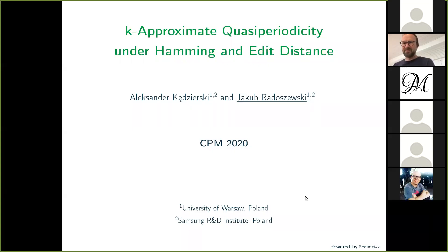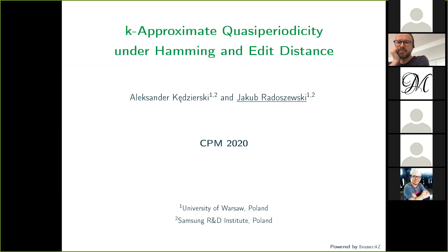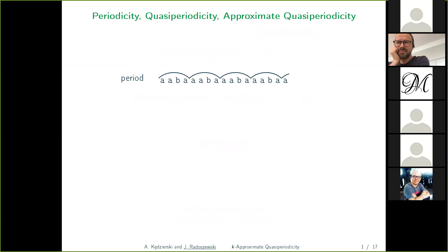My talk is about variants of quasi-periodicity, covers, and related topics in the approximate version. Let me start by introducing the basics. A string is called periodic if it is formed of more than two repetitions of the same period.